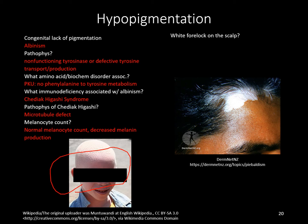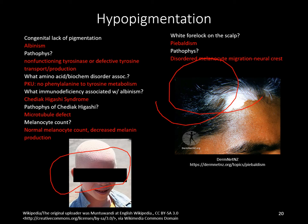Disorders of pigmentation: PKU can be associated with lighter skin tones due to deficiency in tyrosine production from phenylalanine. A high-yield immunodeficiency associated with albinism is Chediak-Higashi syndrome — a microtubule defect causing deficient neutrophil migration. Melanocyte count in albinism is normal but melanin production is decreased due to non-functioning tyrosinase. Piebaldism presents as a white forelock on the scalp due to disordered melanocyte migration from the neural crest.